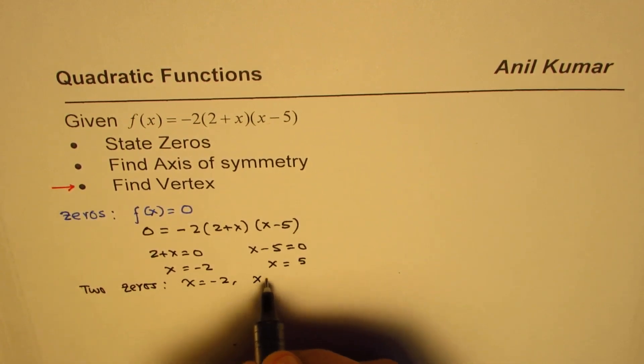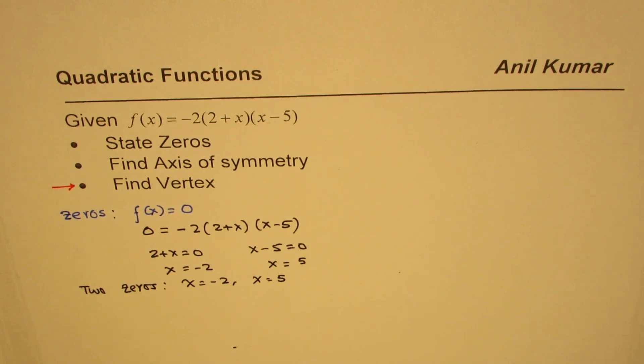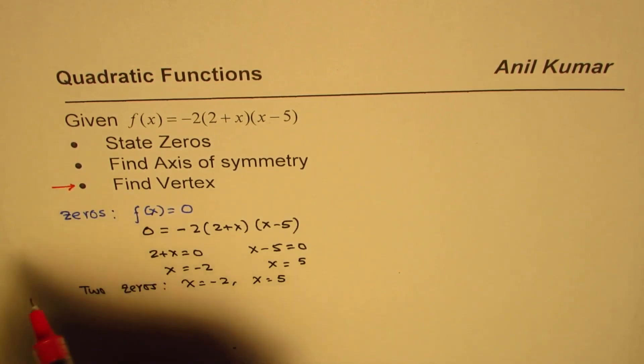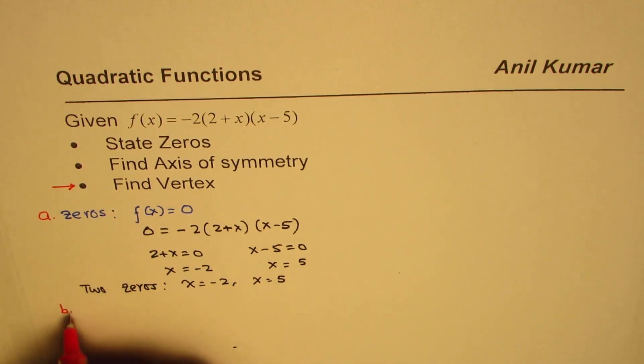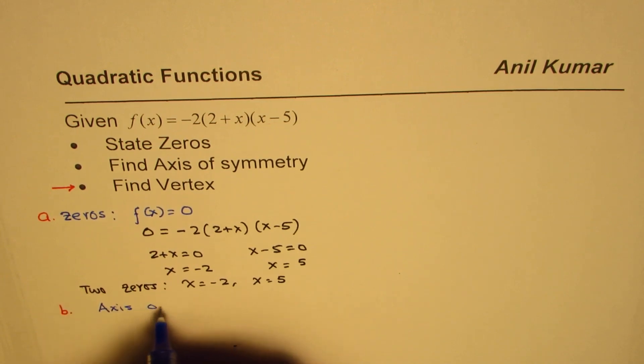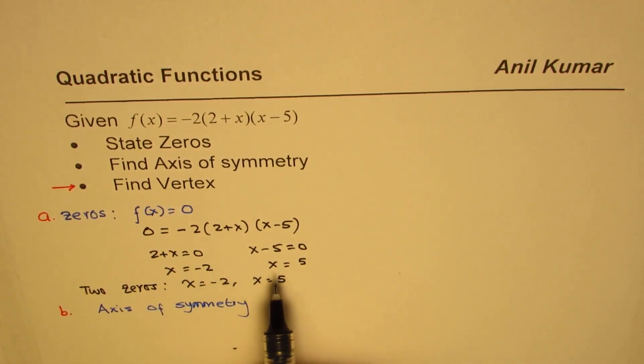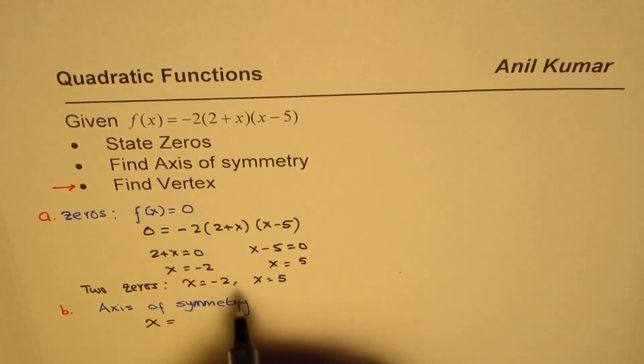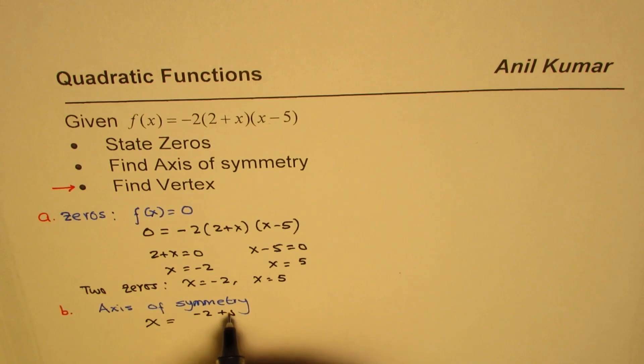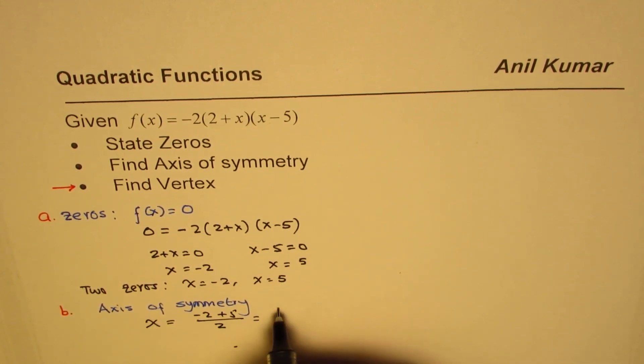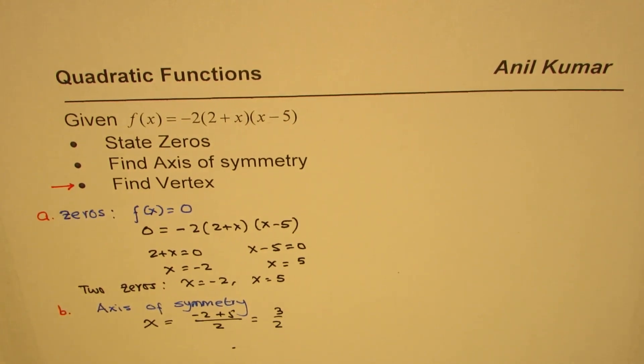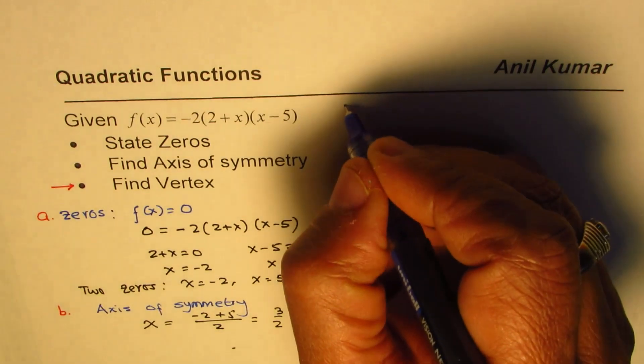We have two zeros at x = -2 and x = 5. That's part a. Part b is to find axis of symmetry. The axis of symmetry will go midway between the two zeros, so x equals the average value: (-2 + 5)/2 = 3/2. So 3/2 is the axis of symmetry.